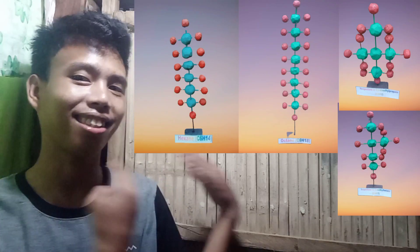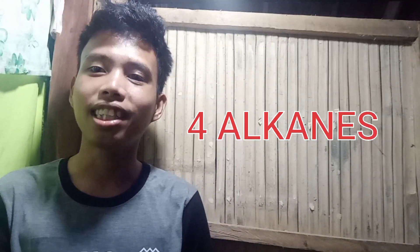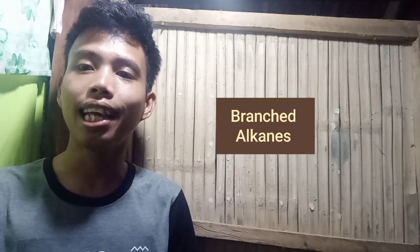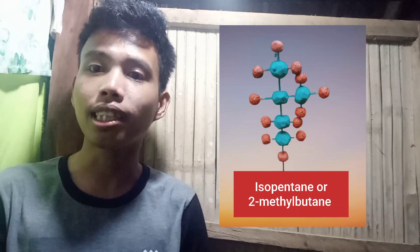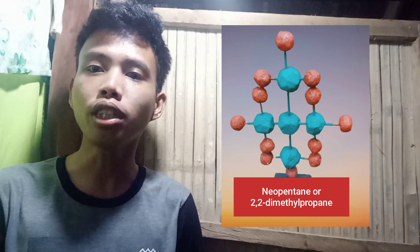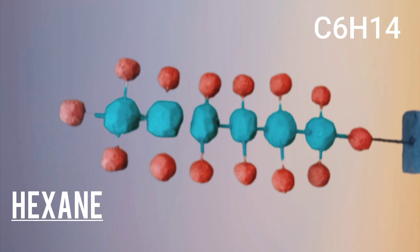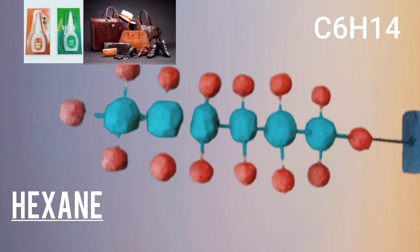Now you have the know-how about alkanes. It's about time to show you the four alkane models I've made: the unbranched alkanes, namely hexane and octane, and the branched alkanes, namely isopentane or 2-methylbutane, and neopentane or 2,2-dimethylpropane. Hexane is an unbranched alkane with six carbon atoms represented by green bulbs, attached to 14 hydrogen atoms represented by red bulbs. Hexane's chemical formula is C6H14. Hexanes are used in making glues for shoes, leather products, and roofings.